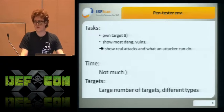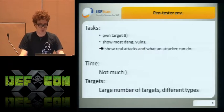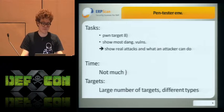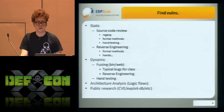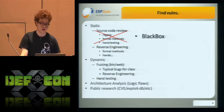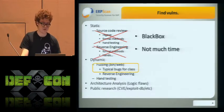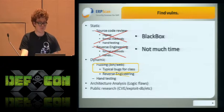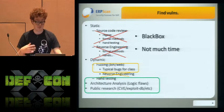We usually have a large number of targets of different types, and unfortunately we usually don't have much time — it's limited. So we couldn't use all bug-hunting methods like source code review, because it usually takes a lot of time and requires reverse engineering. For the same reason, we could use only a little bit of fuzzing if we have a binary. Anyway, usually we can use logic, looking for logic flaws, and searching bugs in public research.